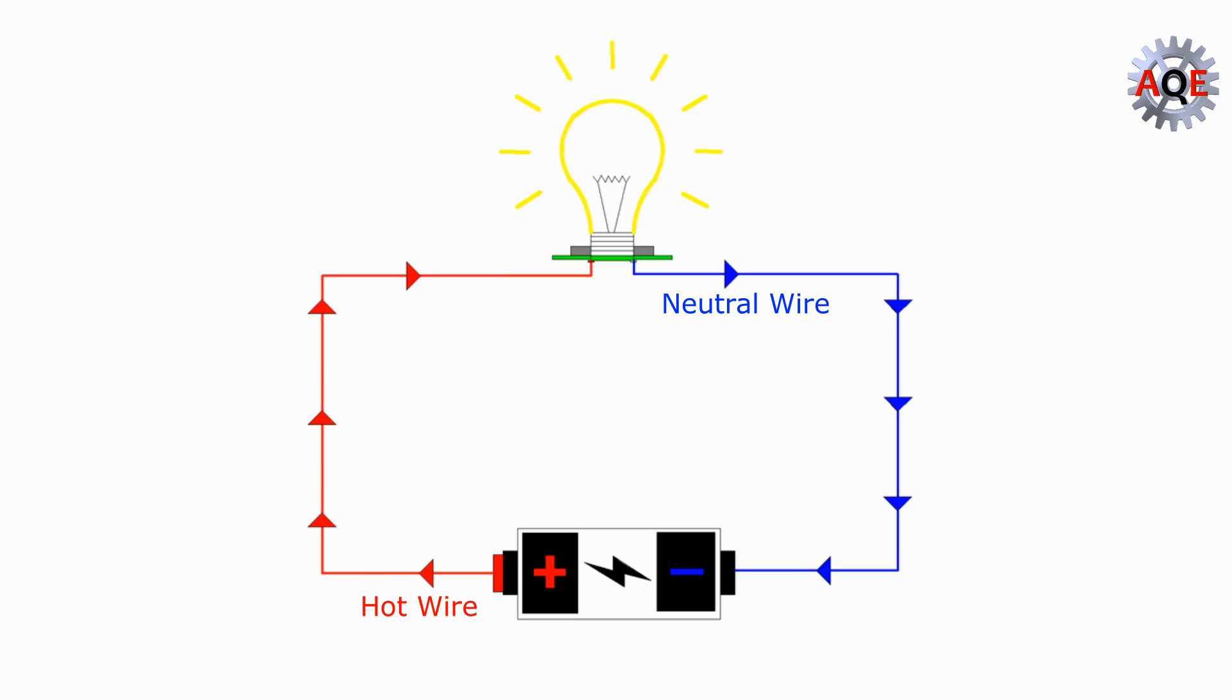Neutral wire carries the circuit back to the original power source. So, with hot and neutral already being used to make a circuit, what role is left? The answer is safety of course.